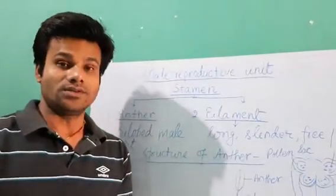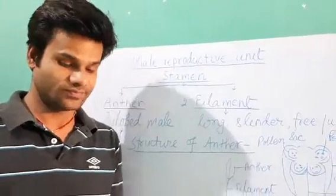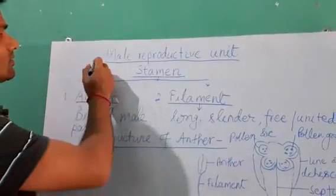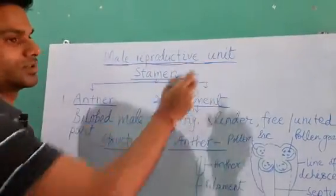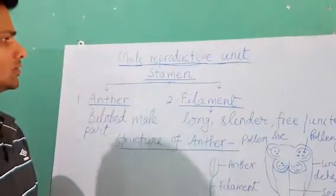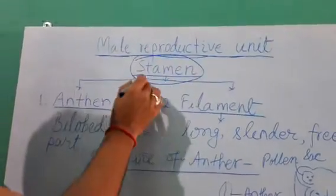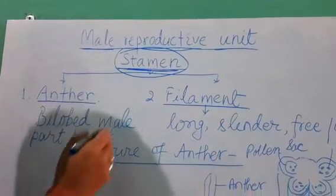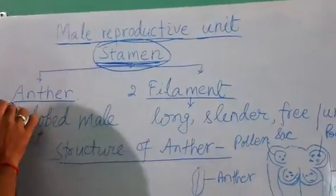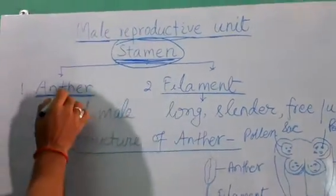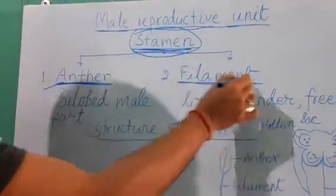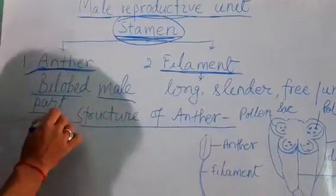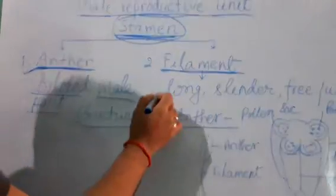Good morning students. Today I explain about the male reproductive unit in flowering plants. The stamen is the male reproductive part in the flower, and this system has two components: one is the anther, and the second is the filament. The anther is a bilobed structure and is the male reproductive part. The filament is a long cylindrical part, either free or united.